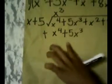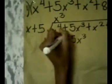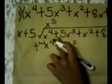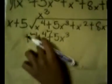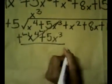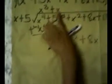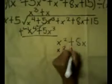In this example, change the sign to negative. x to the 4th power plus 5x cubed minus x to the 4th power minus 5x cubed is equal to 0, so this is cancelled. Now, bring down x squared plus 8x. Divide x squared plus 8x by x plus 5. x squared divided by x is equal to x. x times x is equal to x squared. x times 5 is equal to 5x.